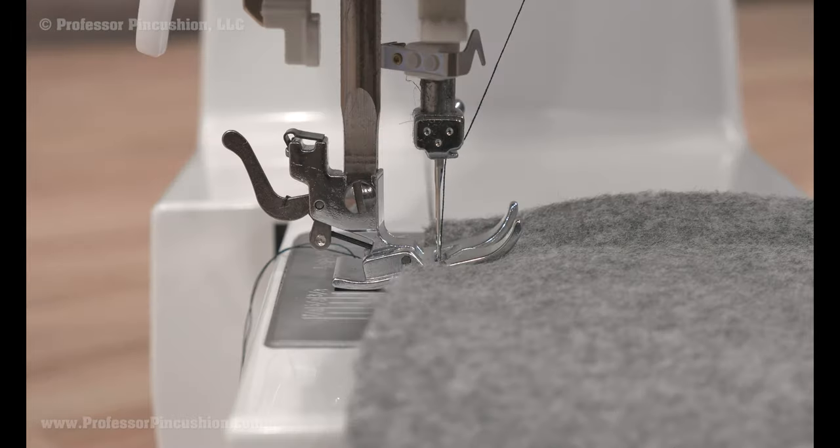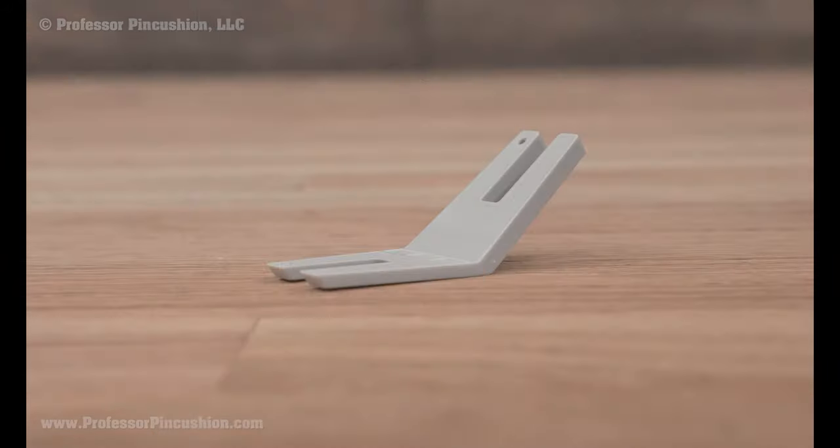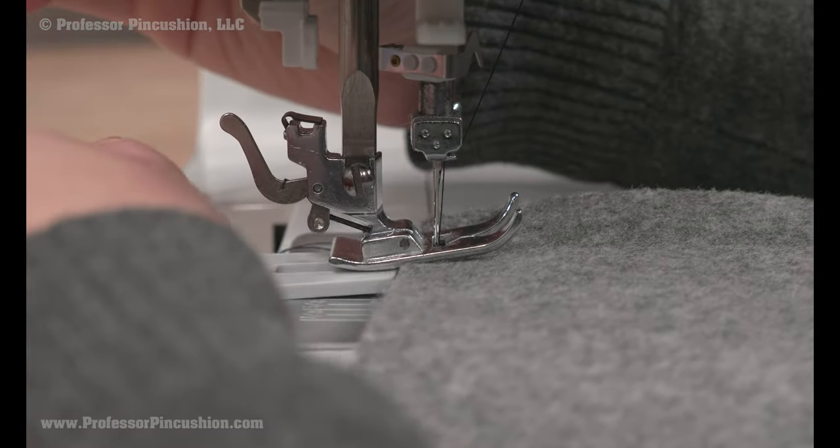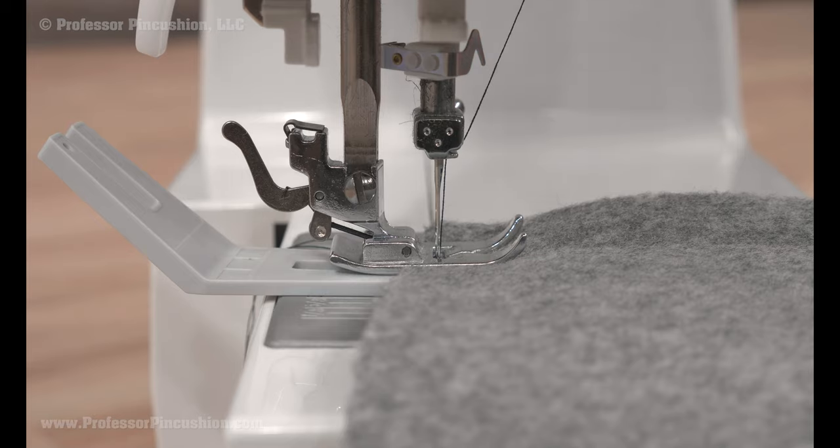If you're not using a walking foot, there are other tricks you can use. If the presser foot is not level, the machine has trouble moving the fabric forward. You can buy a leveler like this one. With the needle down, lift the foot and place it under the presser foot, either in front of or behind the needle in order to level the foot.